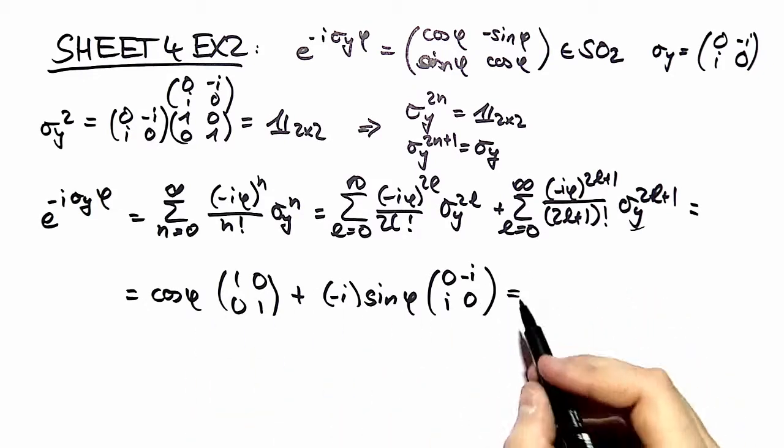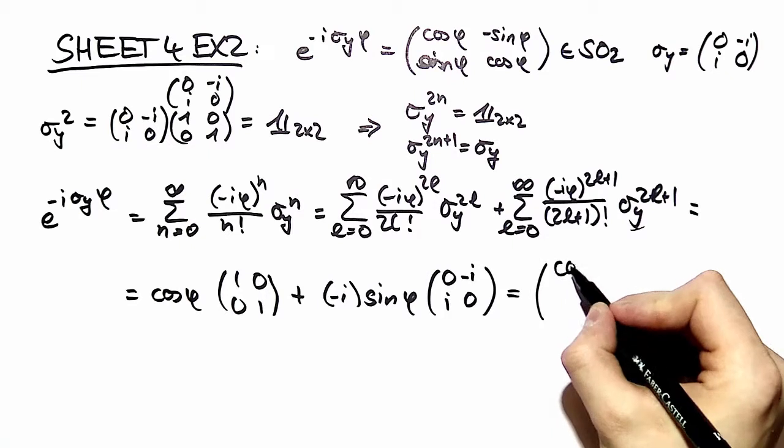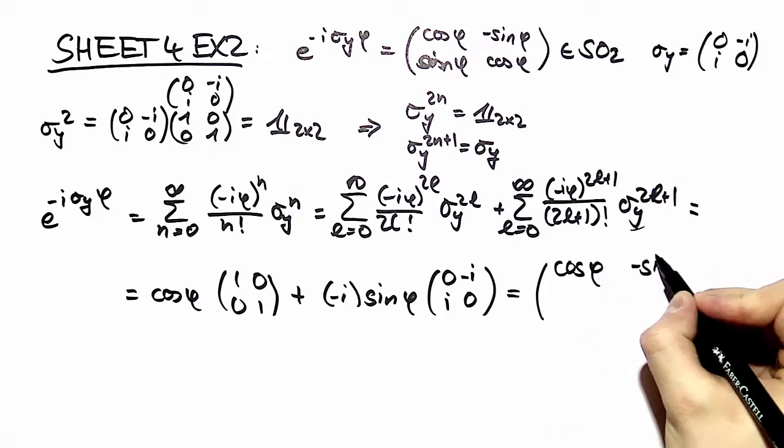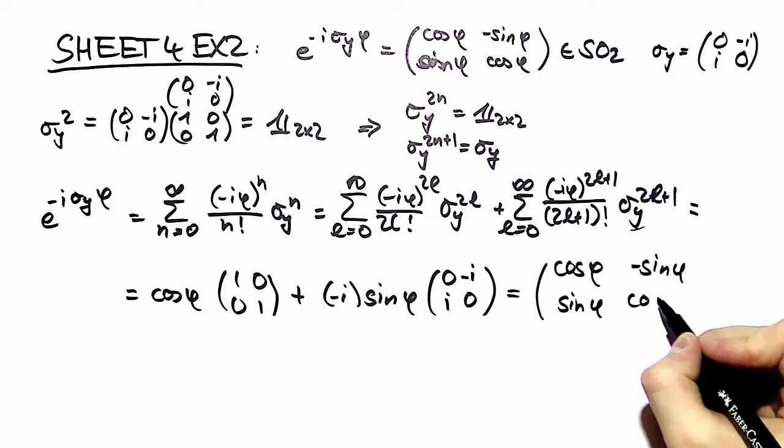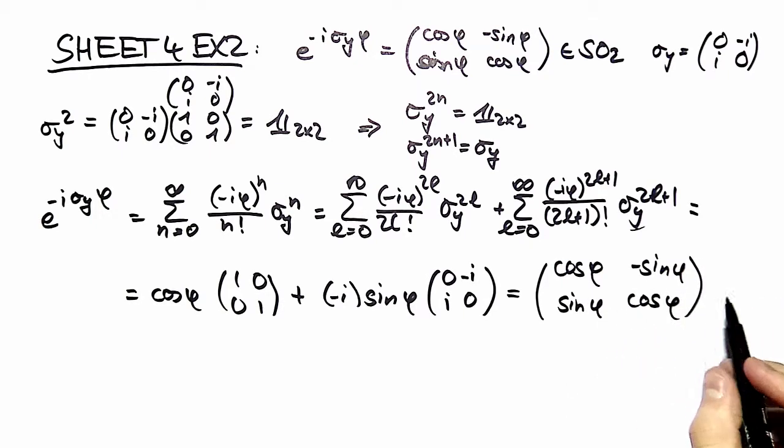Now we add those matrices and we get back what we should get back, namely the matrices which give SO2.